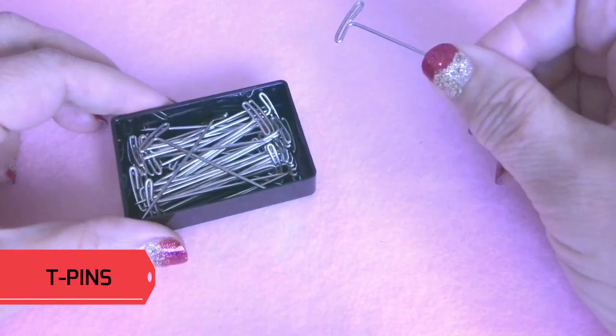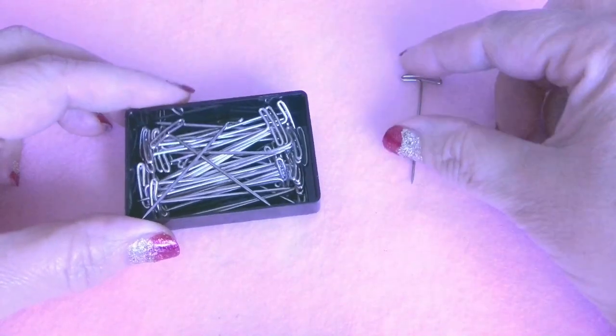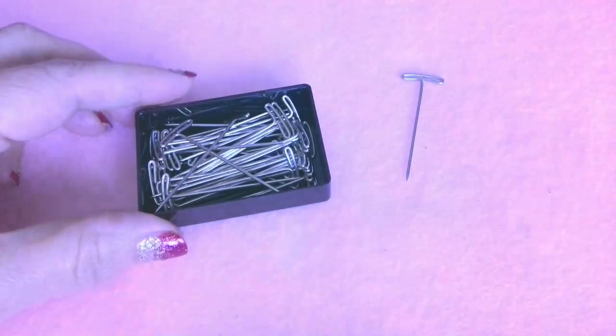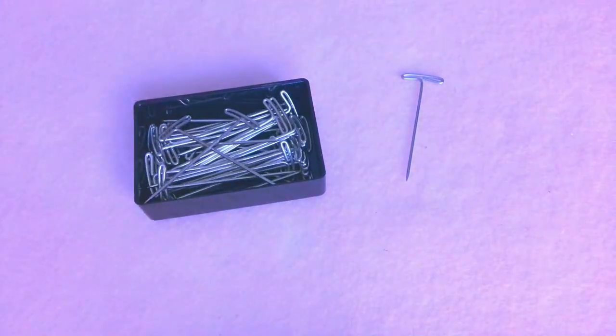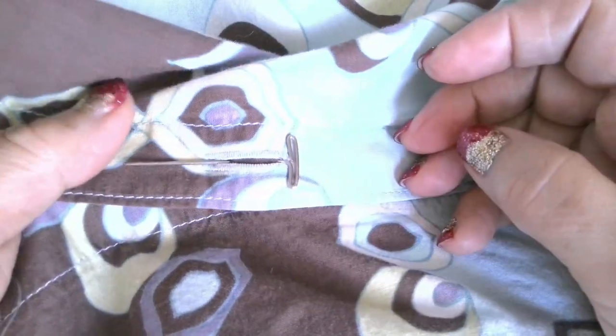T-pins. Featuring a T-shaped head, these heavy duty pins are great to use with upholstery, tough fabrics or pinning through buttonholes. Look, if you pin the T-pin like this, the layers will stay put as well. The buttonhole cannot be open. You need it sometimes, right?